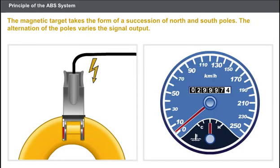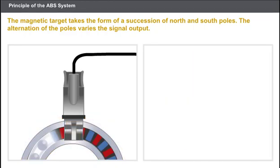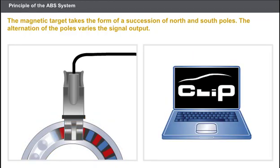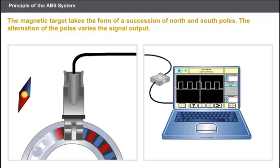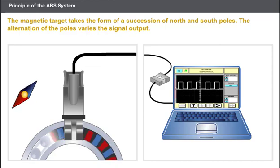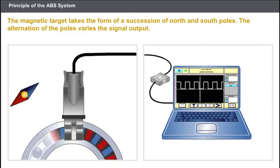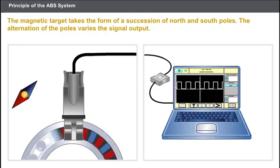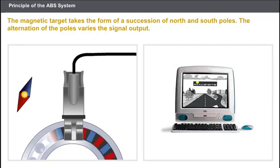The active sensor is supplied by the computer and measures the speed of rotation from zero kilometres per hour. The sensor is fixed opposite the target, which is sometimes built into the wheel bearing. The magnetic target takes the form of a succession of north and south poles. The alternation of the poles varies the signal output, which takes the form of a square pulse signal of variable frequency. When replacing a wheel bearing, comply with the recommendations in the technical documentation.